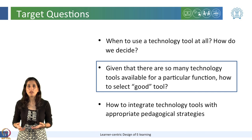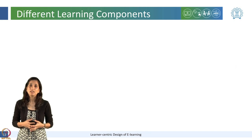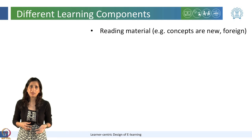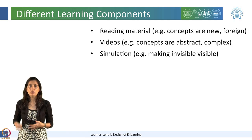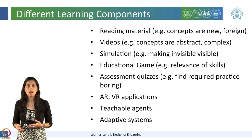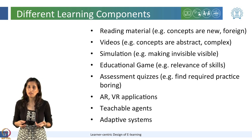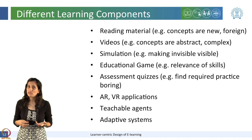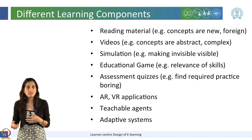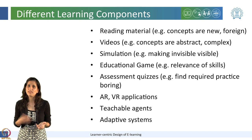Now, given that there are so many technology tools available for a particular function, how to select a good tool? The e-learning content can comprise of various learning elements including reading materials, videos, simulations, educational games, assessment, quizzes, teachable agents, and adaptive systems. These different learning components are utilized for different purposes: reading material is used when the concepts are new or foreign; videos are used when the concepts are abstract or complex; simulations are used when you want to make invisible processes or elements visible; and educational games can make learners understand the relevance of skills.